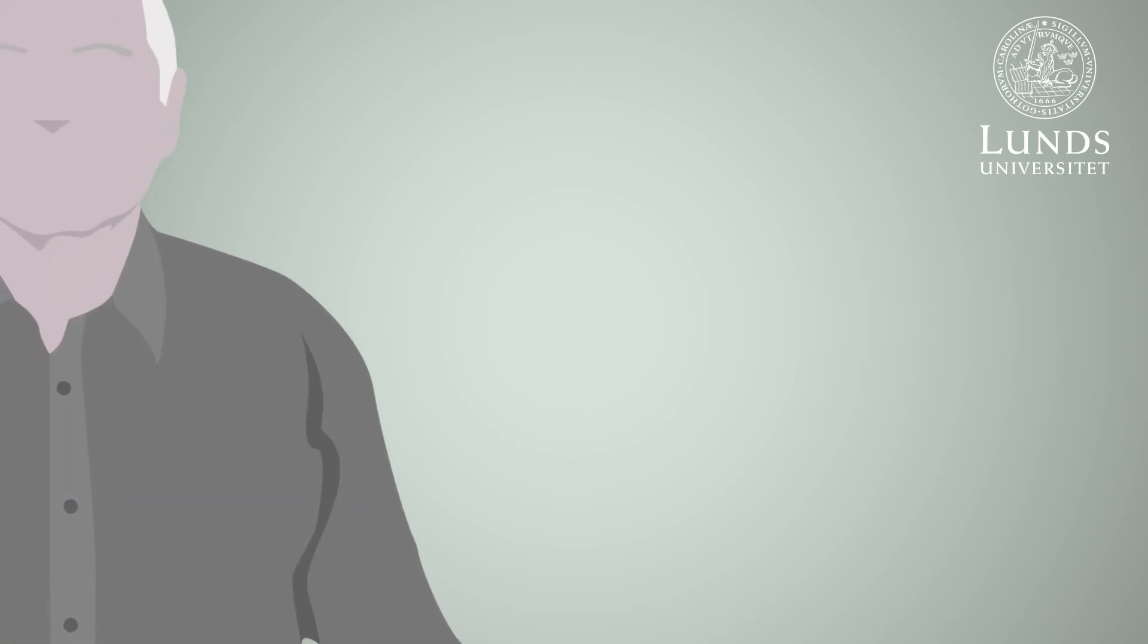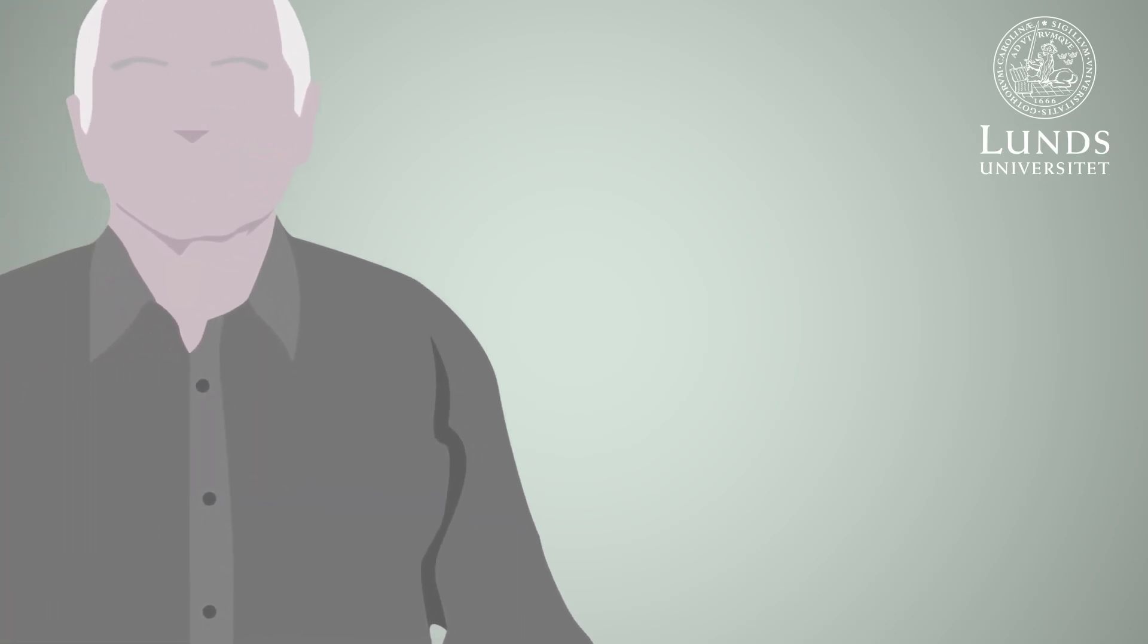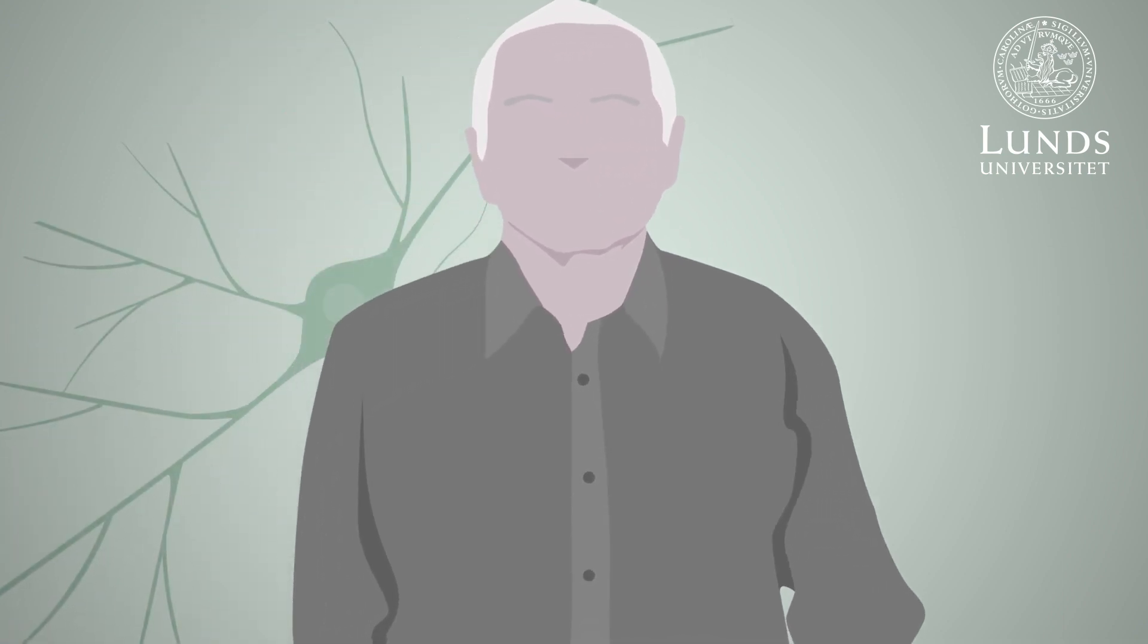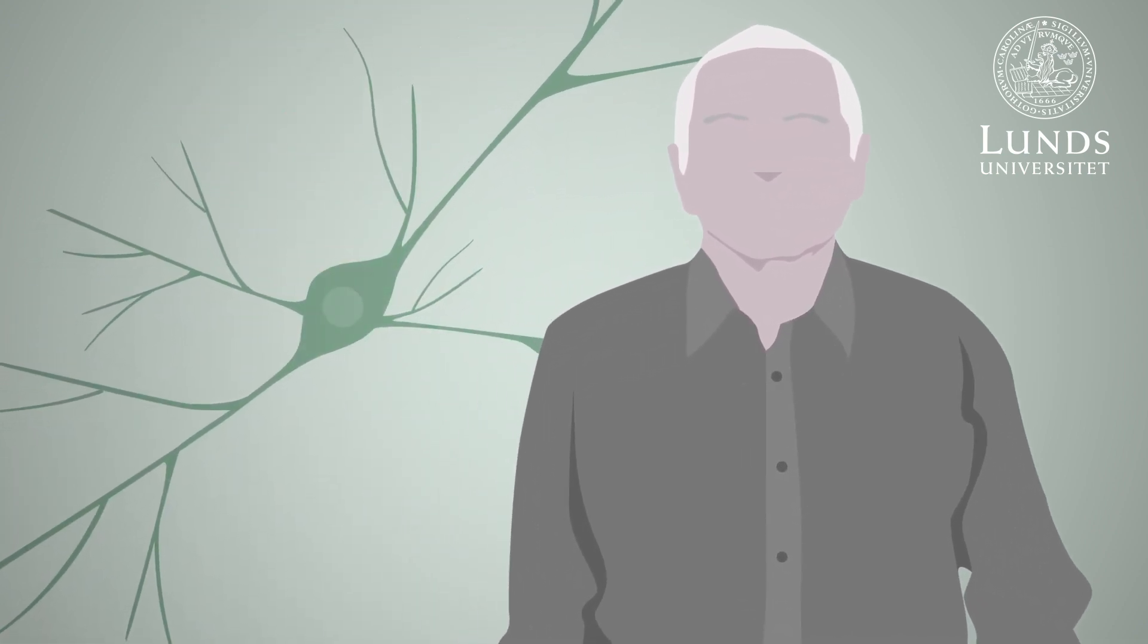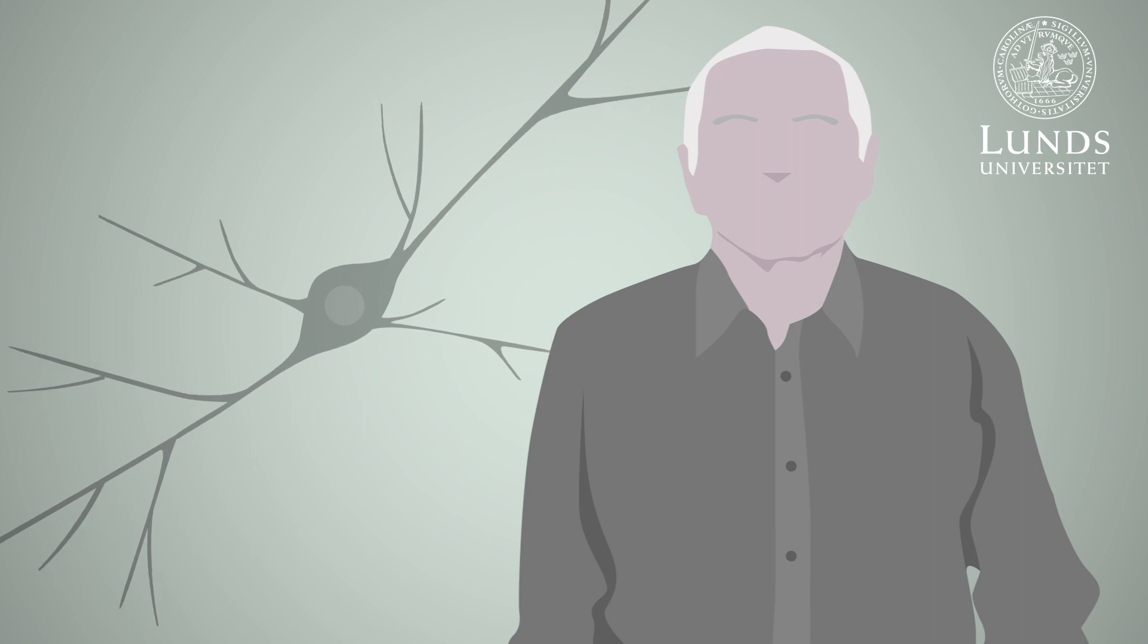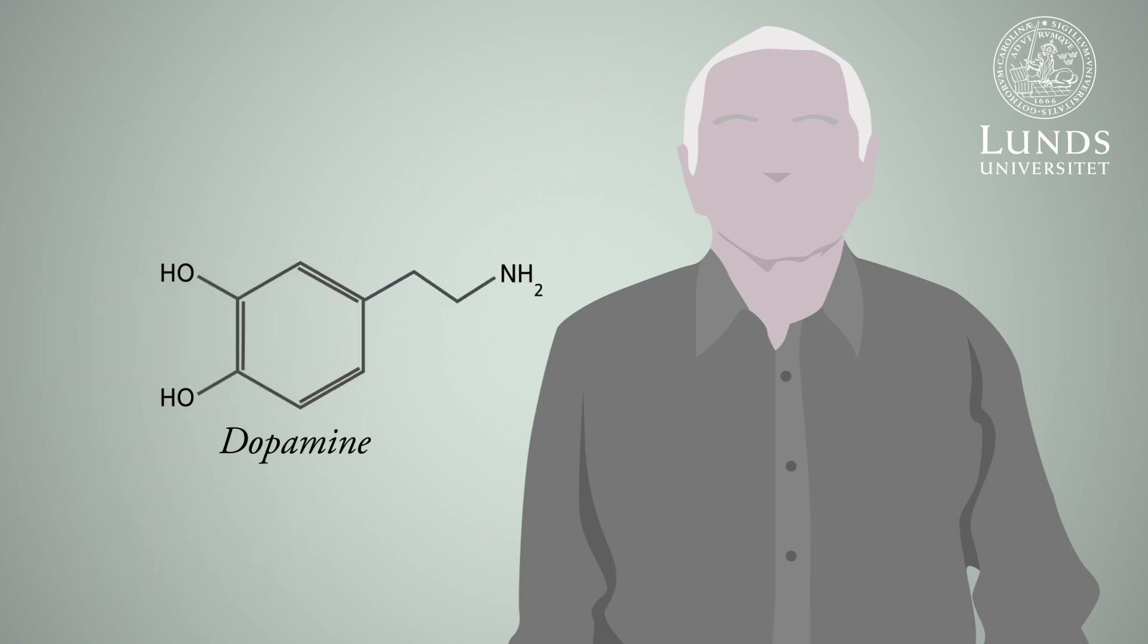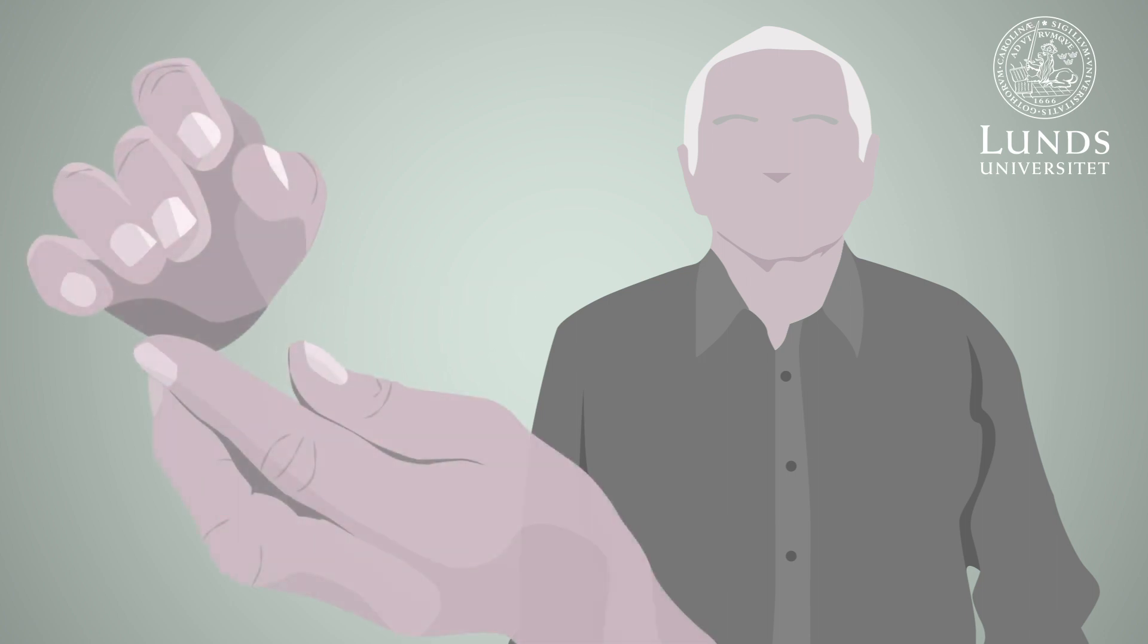Parkinson's disease is the second most common neurodegenerative disease after Alzheimer's. The disease arises with the death of dopamine-producing nerve cells in a certain part of the brain. Dopamine is very important for the brain's control of movement, and slow rigid movements and tremors are common symptoms of Parkinson's.